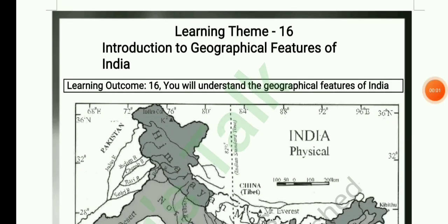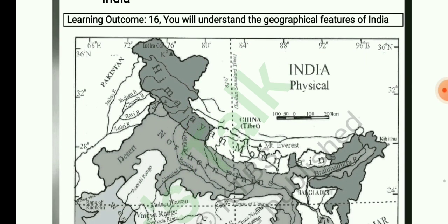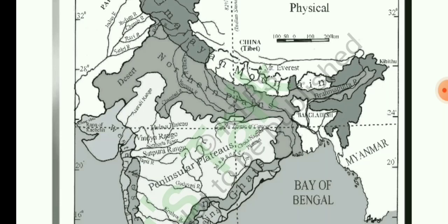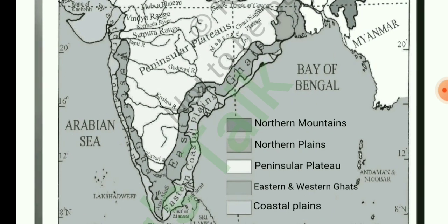Learning Outcome 16: you will understand the geographical features of India. You can see this India Physical Map. On the basis of physiography, India can be divided into 4 major divisions. They are Northern Mountain, Northern Plains, Peninsular Plateau, and Eastern and Western Ghats and Coastal Plains.